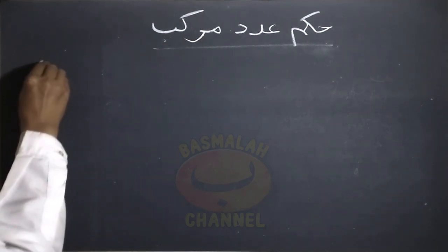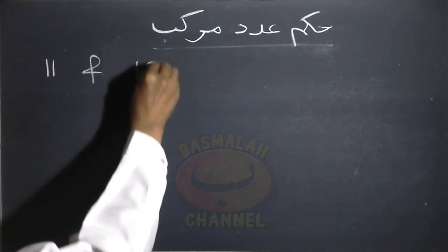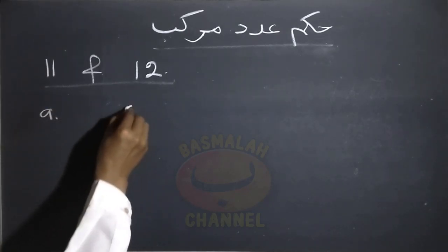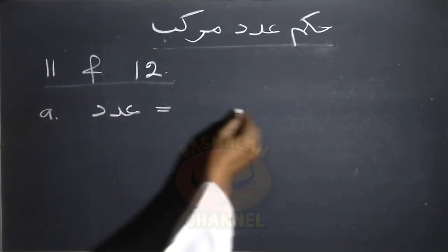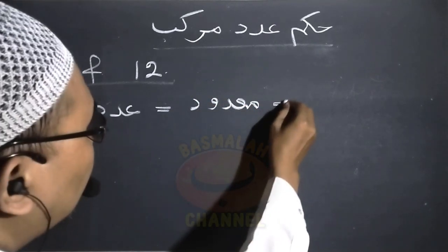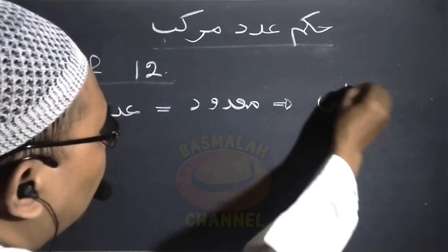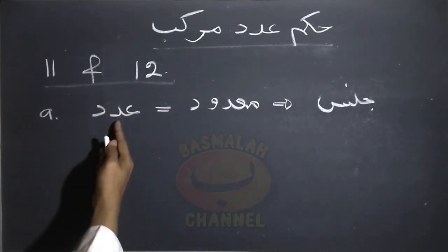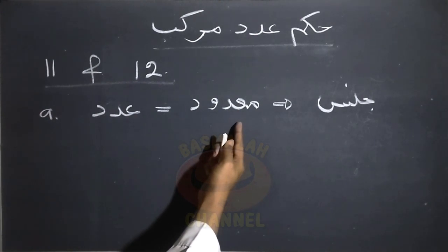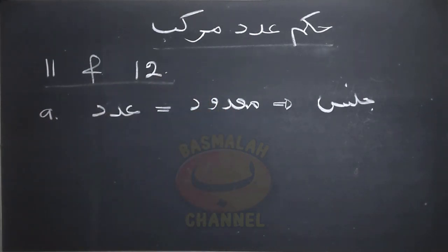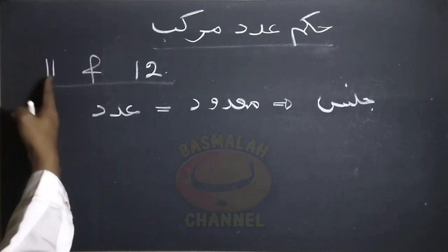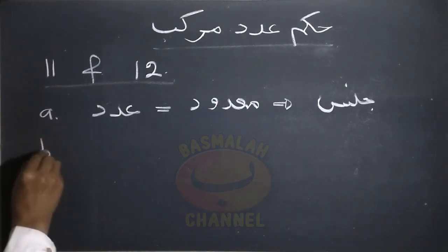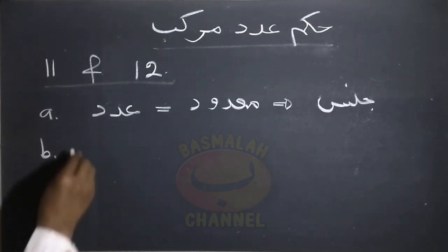Kita mulai dari bilangan sebelas dan bilangan dua belas. Dalam hal ini terdapat beberapa ketentuan. Ketentuan yang pertama adalah adat ini harus sama dengan makdudnya dalam hal jenisnya, artinya dalam hal mudakar dan mu'anasnya. Manakala makdudnya mudakar maka adatnya pun harus berbentuk mudakar. Demikian pula manakala makdudnya mu'anas maka adatnya pun harus sama dengan makdudnya. Hal ini berlaku untuk bilangan satuan dan puluhannya, jadi semuanya mengikuti jenis daripada makdudnya.